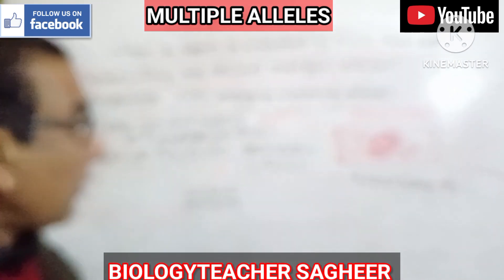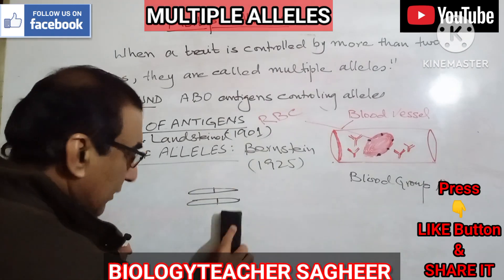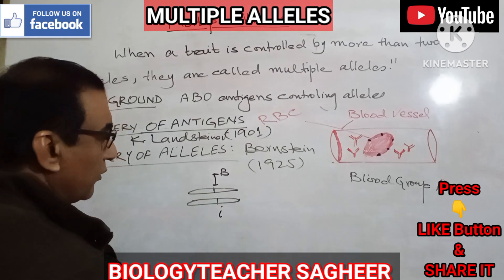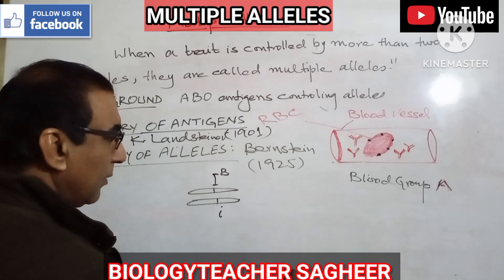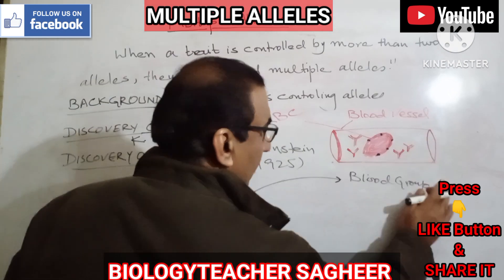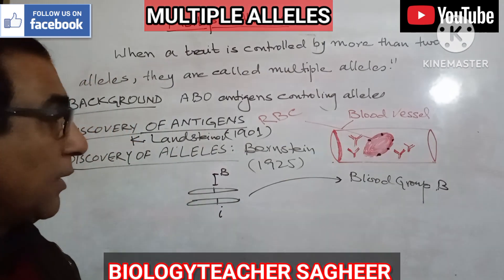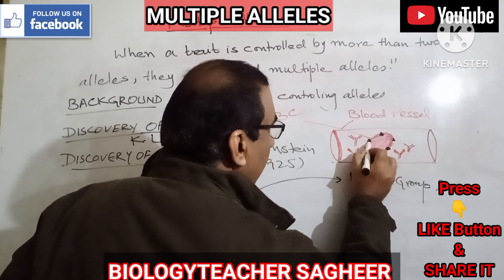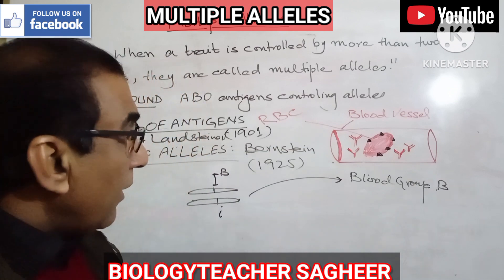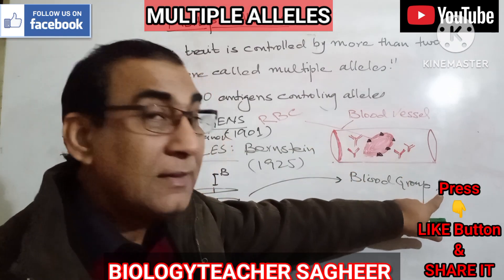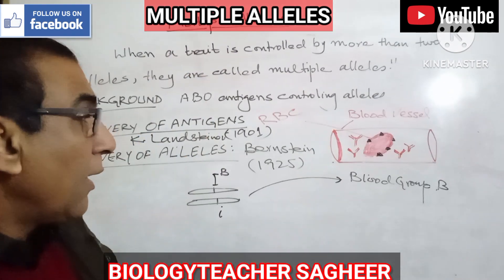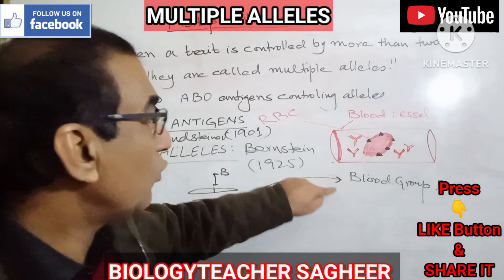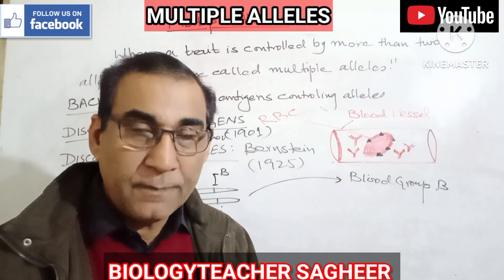If the blood group is B, with small i or capital I-B present, the individual would have blood group B, and antibodies against antigen A would be present. If blood group A — carrying antigen A — is transfused to a blood group B individual, the agglutination reaction would occur and the individual would die.